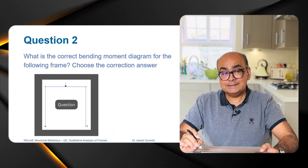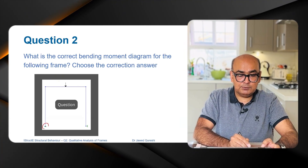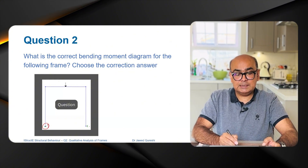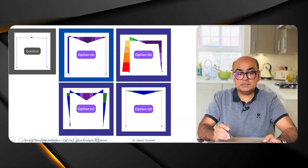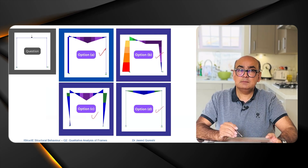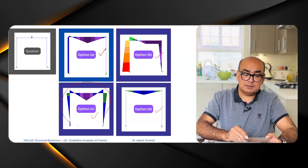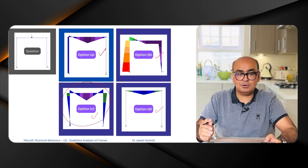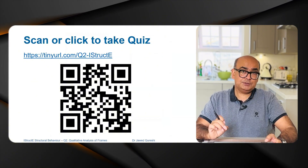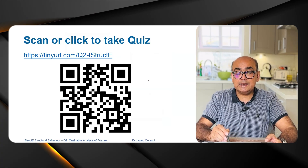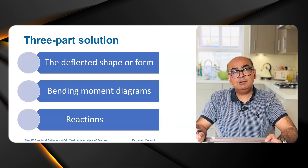This is the question which I'm going to be partly solving in this tutorial: what is the correct bending moment diagram for this frame? Note here that we have a fixed support on the left side and a vertical roller support on the right side, and you have to choose the correct answer — there are four options. Majority of people in my YouTube community think that option B is right. I strongly suggest that you take this quiz before watching this presentation by scanning this slide or going to the URL shown.